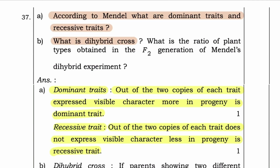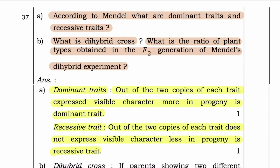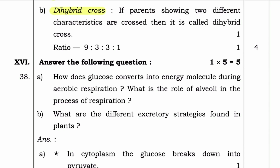Question B: What is dihybrid cross? What is the ratio of plant types obtained in F2 generation of Mendel's dihybrid experiment? Answer — Dihybrid cross: if parents showing two different characteristics are crossed, then it is called a dihybrid cross. The ratio is 9:3:3:1.